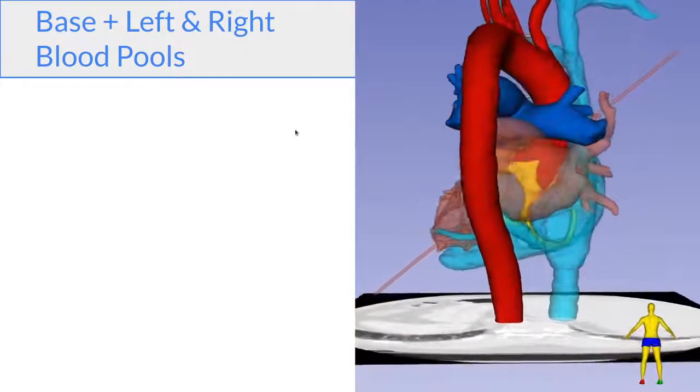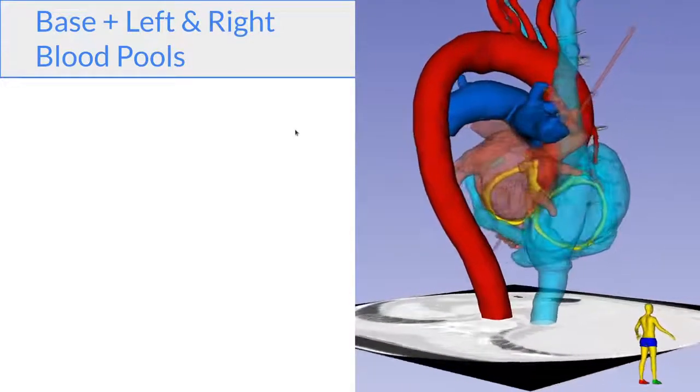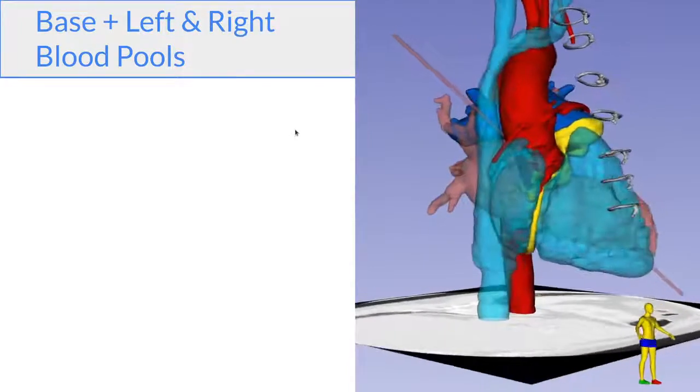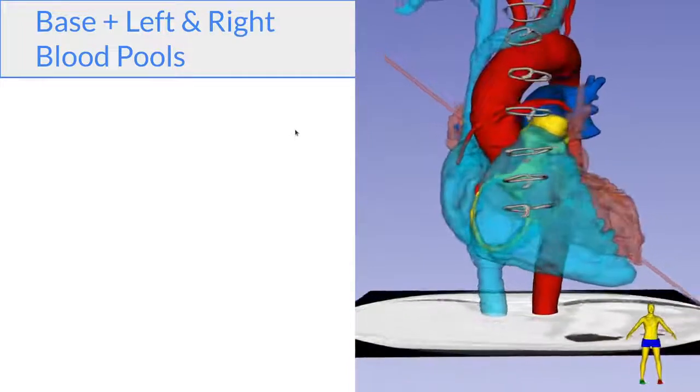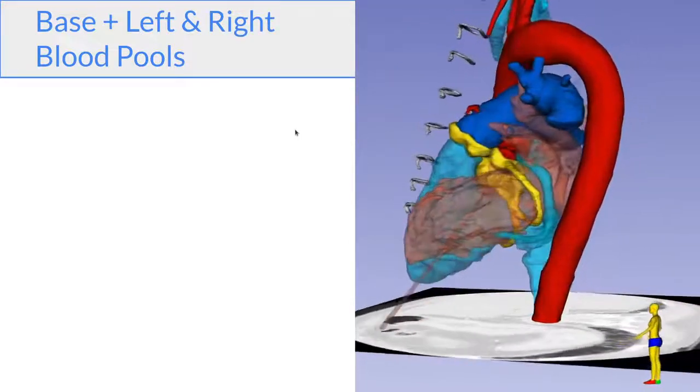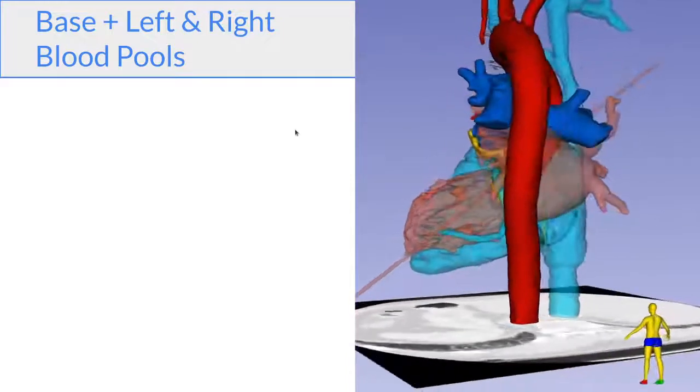So here we put everything together. It's a little bit overwhelming at first, but again, if you remember the previous figures where we did this piece by piece, you can see the right heart blood pool, the aorta, pulmonary artery, the left heart blood pool, all of them anchored to the heart base in the center.